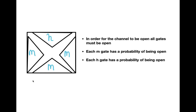In order for the channel to be open, all of these gates must be open. Inside the voltage-gated sodium channel, according to the Hodgkin-Huxley model, there are four gates total: three M-gates (activation gates), which open quickly in response to depolarization and close quickly in response to hyperpolarization, and one H-gate (inactivation gate), which opens in response to hyperpolarization and closes in response to depolarization, doing so very slowly.